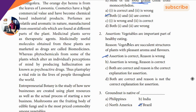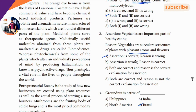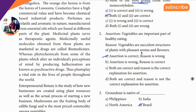Second question: vegetables are an important part of healthy eating — correct, right. The reason: one is the succulent structures of plants with pleasant aroma and flavors — pleasant. So the reason is wrong. If you look at the vegetables, the taste is good, but the answer is correct and the reason is wrong.